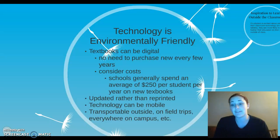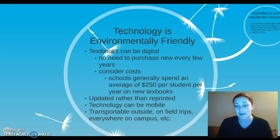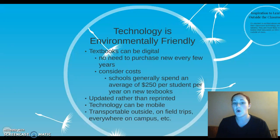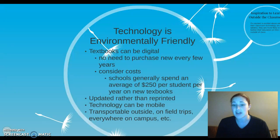Technology is also very environmentally friendly. Textbooks can now be digital, so you don't need to purchase a new one every few years. If it's $250 per year on new textbooks and the textbook is constantly updating with new information, schools will spend more money over time buying new textbooks when you could just have a tablet worth $250 and simply update the material in it. It's easier to update something than reprint a whole textbook, and it saves on how many trees are cut down. Technology can also be mobile, so you can take it outside on field trips and anywhere on campus, making it a versatile classroom.